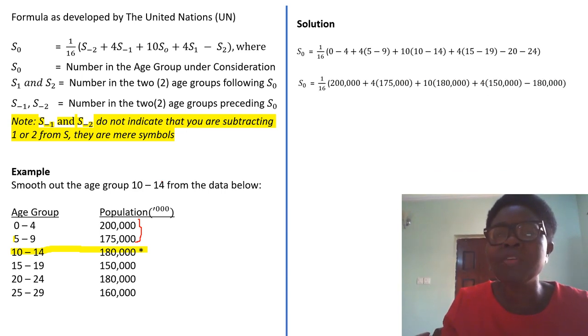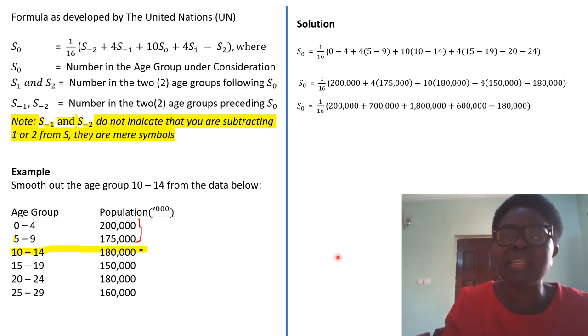Now that we have known the ages that fall into the group, the next thing is for us to substitute the figures. For those that are ages 0 to 4 is 200,000. For those that are ages 5 to 9 is 175,000. That is why you are having it here. For the age under consideration, it's 180,000. So you discover we substitute each of them until we get to the end of it.